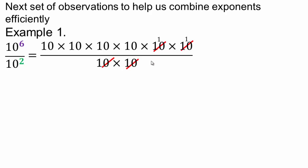Your denominator is going to be 1. The numerator is going to be 10 to the 4. How did we get the 4? We have six tens on the numerator and two tens on the bottom — we eliminated the two from the bottom by division. So when you divide a base to an exponent by the same base to a different exponent, you can subtract the exponents. That's what we're observing here.